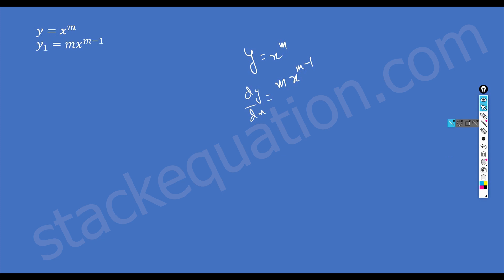The first derivative will be m·x to the power m minus 1. Then we find the second derivative by taking the derivative of the first derivative. We bring m minus 1 down and subtract 1 from m minus 1, which gives us m minus 2. So we just differentiate the differentiation — I differentiated once and got this, then differentiated again and got this.